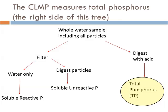Phosphorus is found in a variety of forms in freshwater systems. It is dissolved in the water, in the tissues of dead and living plants and animals, and absorbed to soil particles. To obtain a total phosphorus measurement, all of these materials are digested with acid in the laboratory to free the phosphate molecule, which is then measured as a concentration in terms of micrograms per liter.